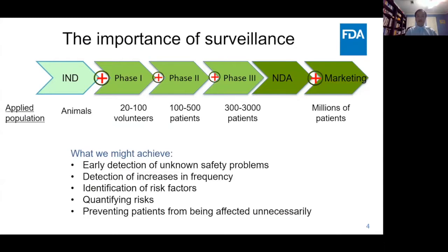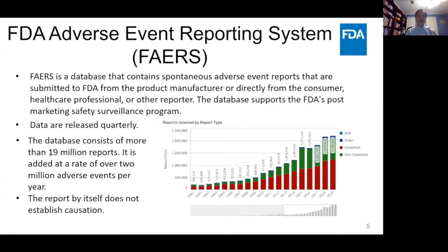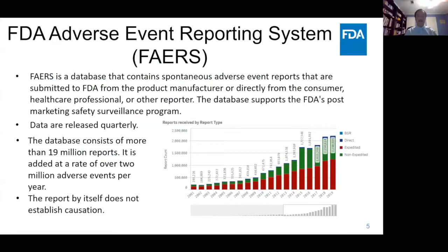An important part of this surveillance effort is the FDA Adverse Event Reporting System, FAERS. This database contains spontaneous adverse event reports to the FDA — the majority from manufacturers, but also from doctors and consumers. In fact, everybody who experiences adverse events when taking drugs can submit a report. There are more than 90 million reports and counting, making it a very rich data source to monitor safety signals, and it has been used very diligently by FDA.